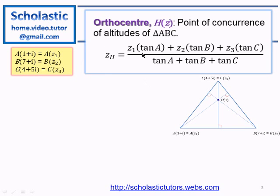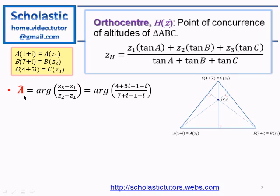To find the angles we use the condition: angle A is equal to argument of (z₃ - z₁) divided by (z₂ - z₁). Basically these are two straight lines and the angle between two straight lines is given by this equation. Now we substitute z₃ as 4+5i and z₁ as 1+i, and then simplify to get the value for angle A, 53.1 degrees, taking the argument of this complex number.